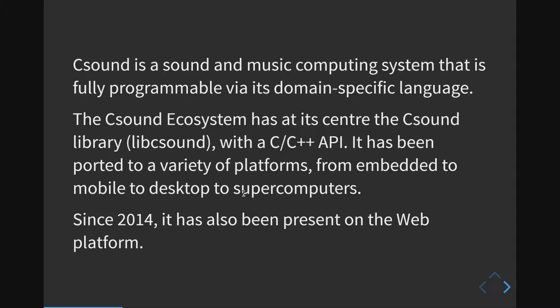The CSound ecosystem. CSound is a sound and music computing system that is fully programmable via its domain-specific language. It's been around since 1986 and derives from computer music software from even earlier. The CSound ecosystem today has at its center the primary CSound library, LibCSound, which has a C and a C++ API.